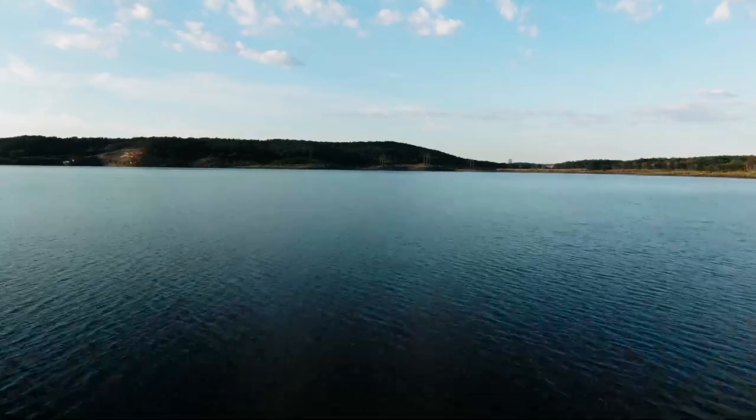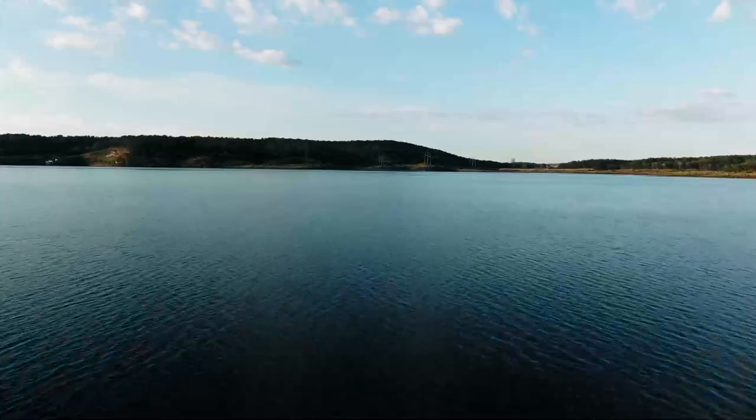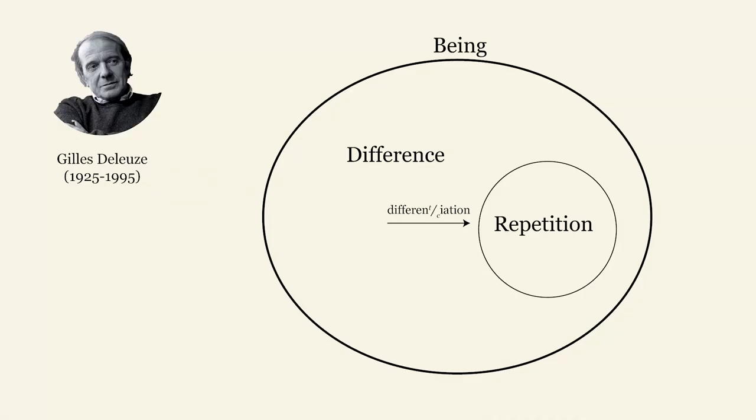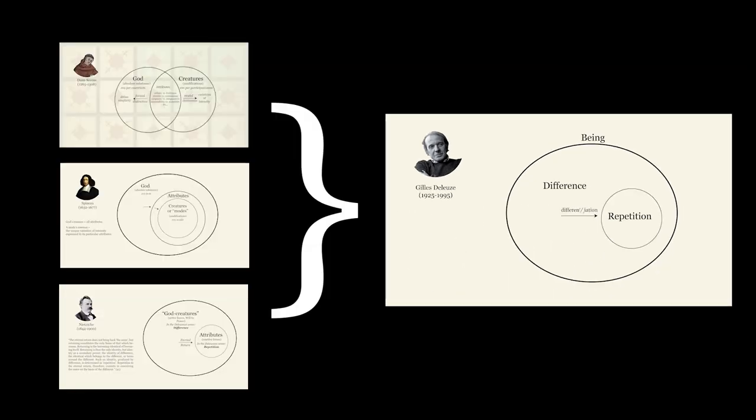In the last video, we have seen how Deleuze makes being univocal by making modes and attributes absolutely equal. The being of modes, that is creatures, is equal to the being of attributes which are abstractions like time, space or goodness. By way of consequence, being is understood as a pure multiplicity. This theoretical background was set by Deleuze in order to discuss repetition, which is the topic of this new chapter.